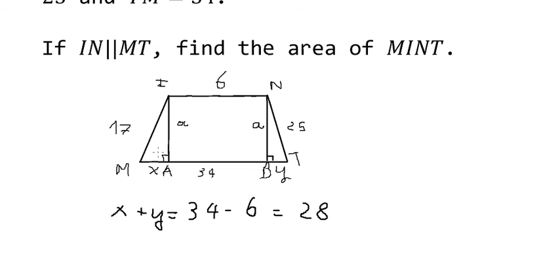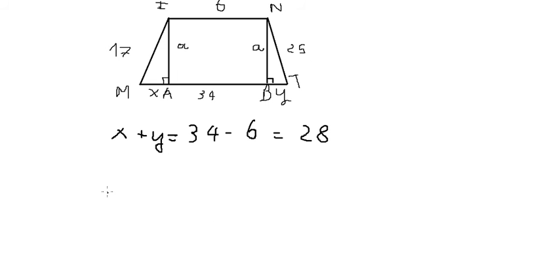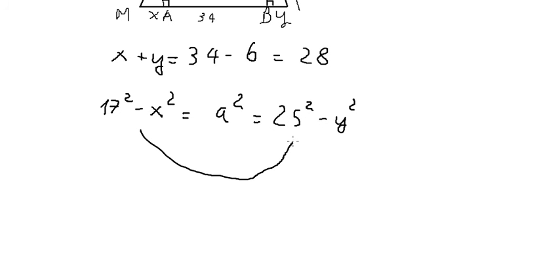Now we have two right triangles: IAM and NBT, so we can apply the Pythagorean theorem. We get 17 squared minus x squared equals a squared equals 25 squared minus y squared. We connect these two equations together.